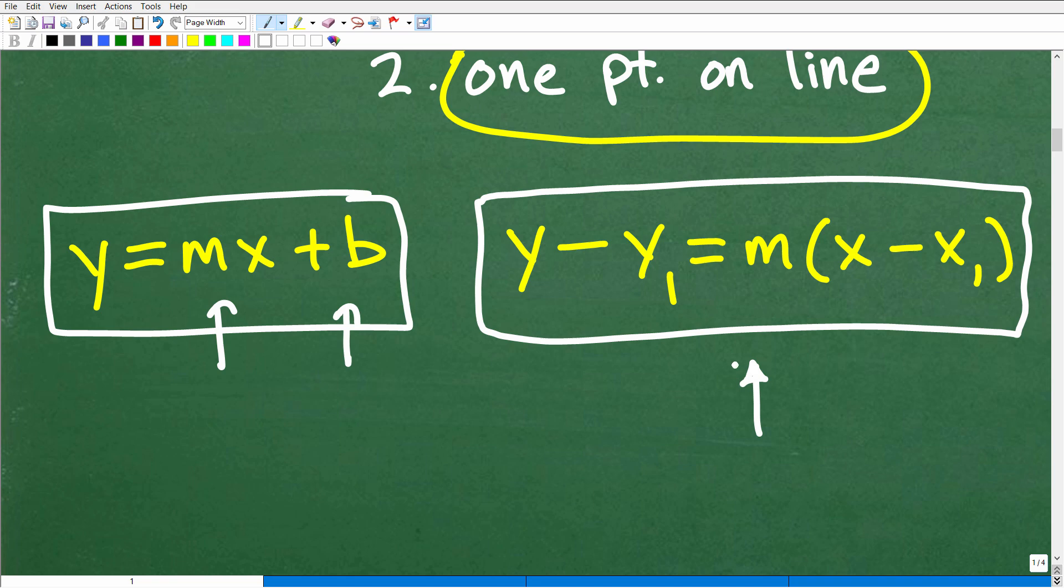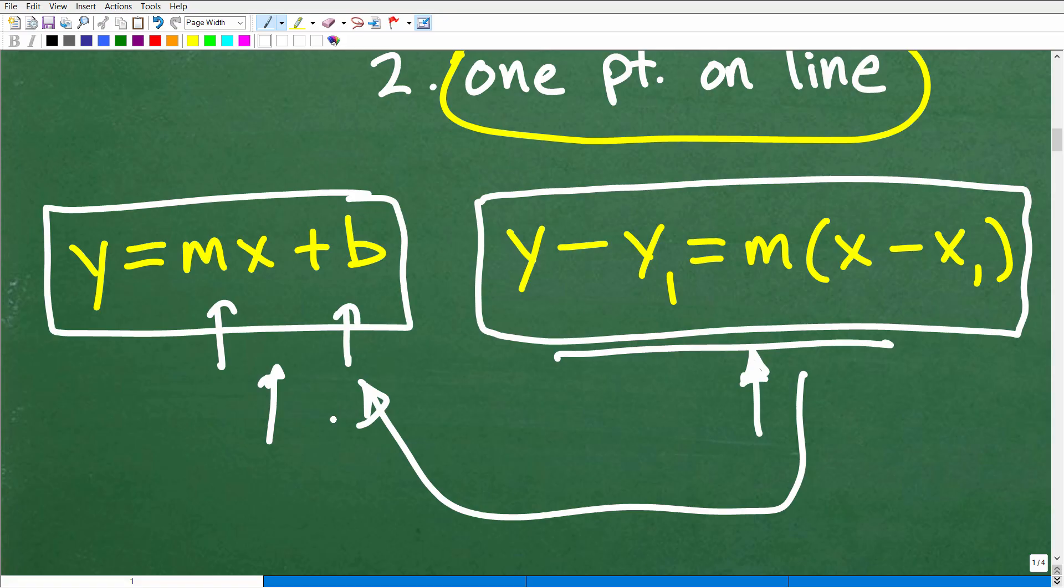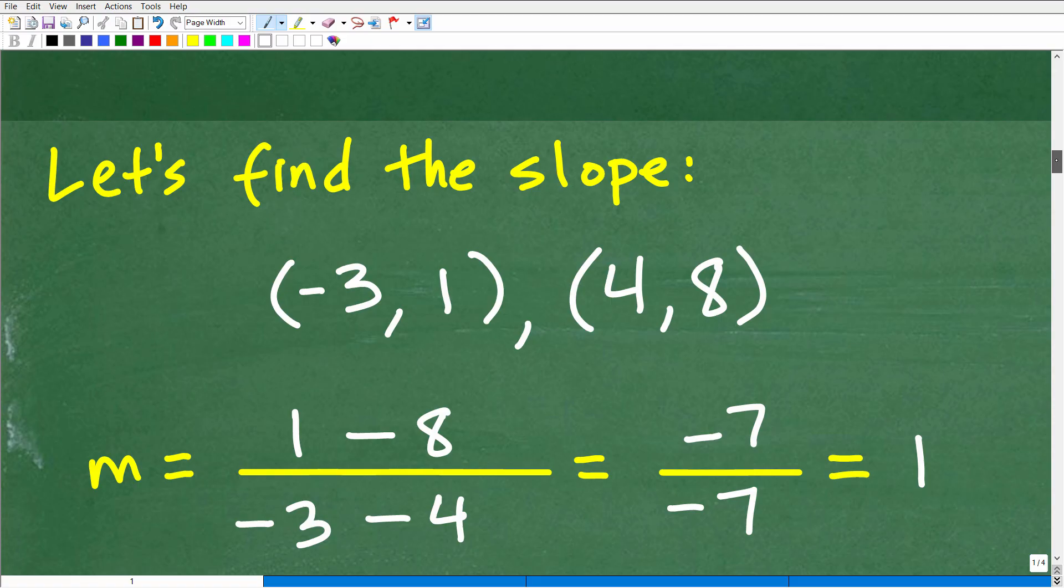So this is the point-slope formula right there, and I'll explain this because this is, in a second, because this is the formula I'm going to use to find the equation of the slide. But again, you could use the slope-intercept formula. But here's the deal. Once we use the point-slope formula, our final answer will be in y equals mx plus b form. Okay, so let's go ahead and get into this right now.